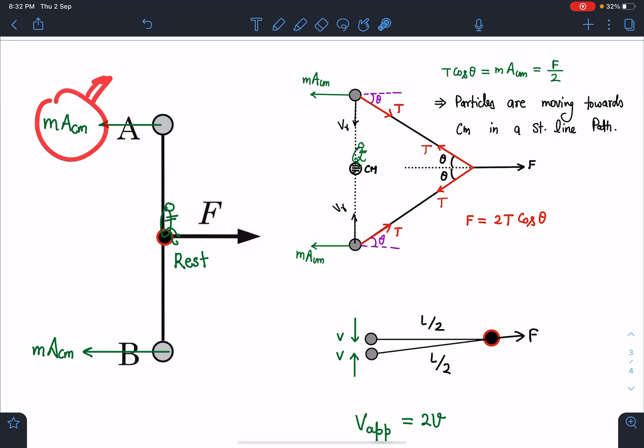Let's say at that instant the string is making some angle theta here. So first thing I can write is this force F in terms of tension: F equals 2T cos theta. All right. Here now you can see this particle will have tension T in this direction and m into a_cm in this direction.